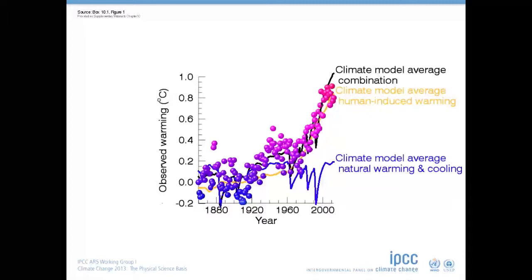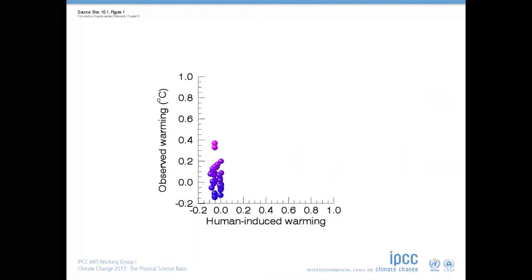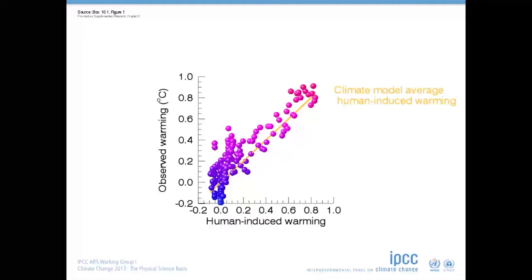To find out, we re-plot exactly the same data. With the size of the model's average human-induced warming in the horizontal instead of time, like this. We still show one dot per year and the height of the dots is unchanged, they are just rearranged.